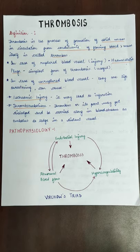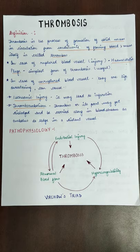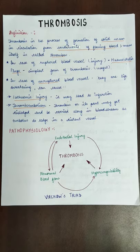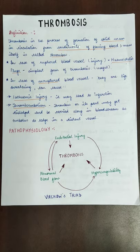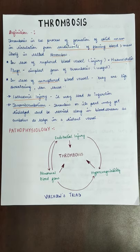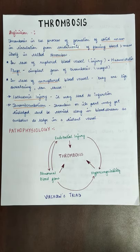Thrombosis can occur in two cases: in a ruptured blood vessel or in an unruptured blood vessel. If there is an injury due to the endothelium lining and the blood vessel is ruptured, it becomes a hemostatic plug — the simplest form of thrombosis. But in an unruptured blood vessel, thrombosis can be life-threatening because it causes two things: ischemic injury and thrombo-embolism.